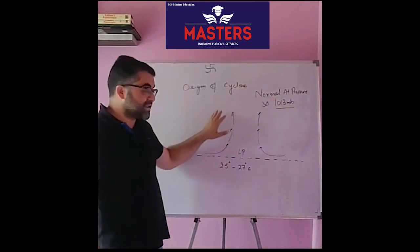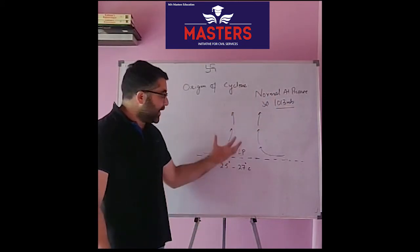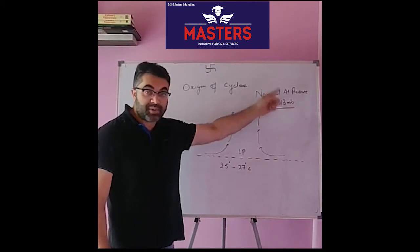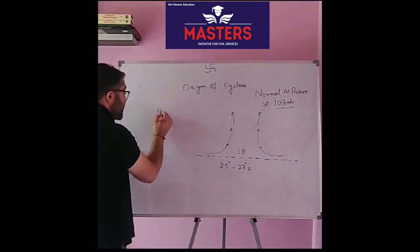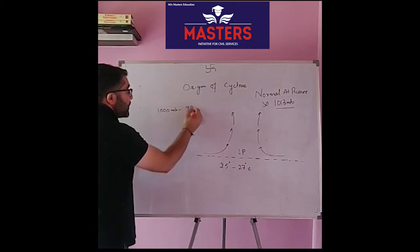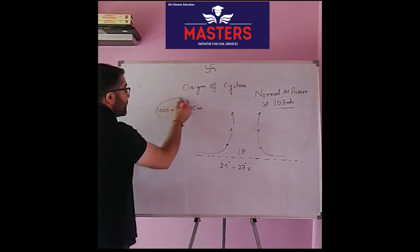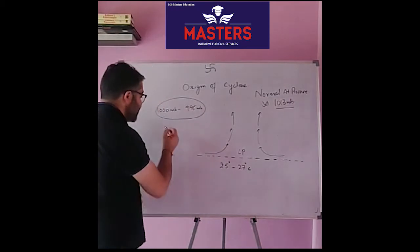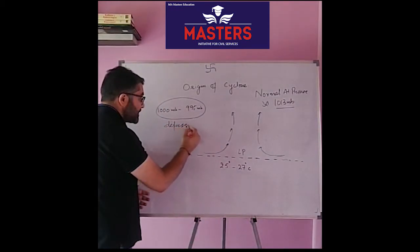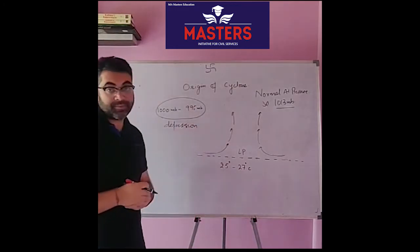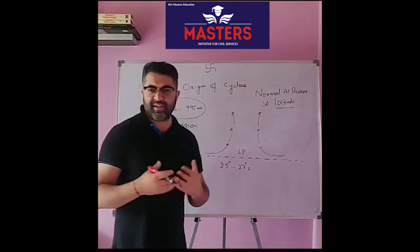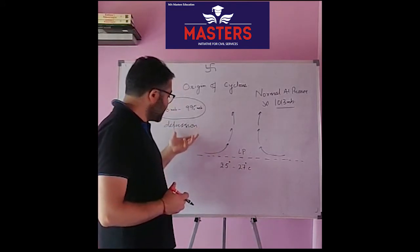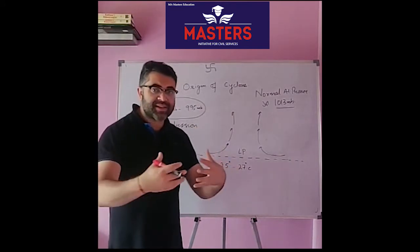As the atmospheric pressure begins to reduce — to around 1000 millibars or 995 millibars — at its very initial stage it is referred to as a depression, or atmospheric depression. This is relative to the surrounding atmospheric pressure. As pressure reduces, this is called depression, and at this stage you can see air masses converging towards the central region where the atmosphere is low.